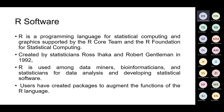R is a programming language for statistical computing and graphing. It was developed by the R Core Team and the R Foundation for Statistical Computing — by Ross and Robert, two statisticians in 1992 who developed this software. R is used by data scientists, bioinformaticians, and statisticians for data analysis and development. R was named after the initial letters of Ross and Robert.